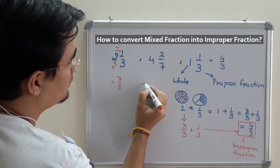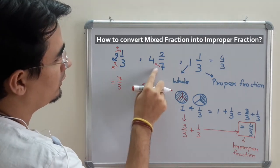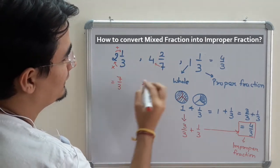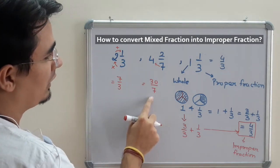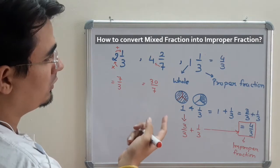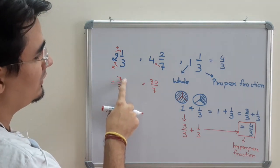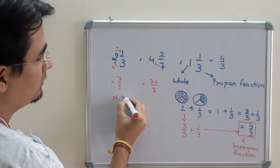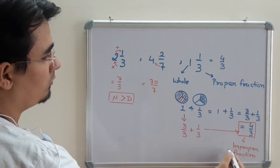Similarly, 7 times 4 is 28, 28 plus 2 is 30 upon 7. These are two improper fractions. Improper fractions are when numerator is greater than denominator. This is the definition of improper fractions.